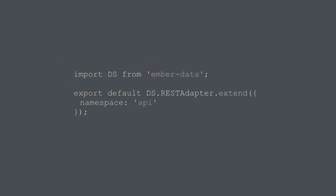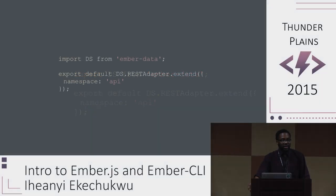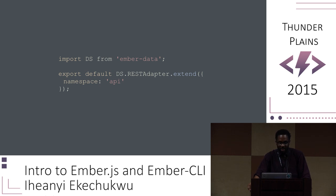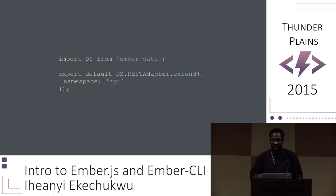With this REST adapter generated, we can configure it to send every single AJAX request from Ember Data to the API namespace in our app. This can further be configured for hostnames in case your API is hosted on an alternative subdomain or a different server.